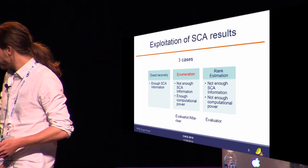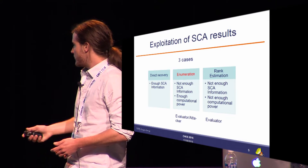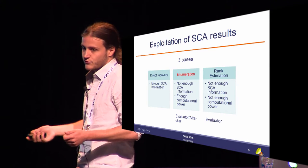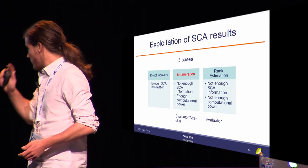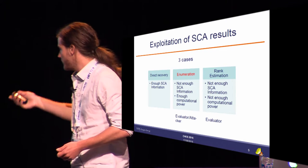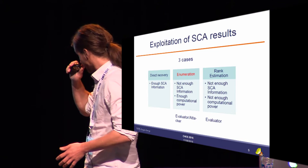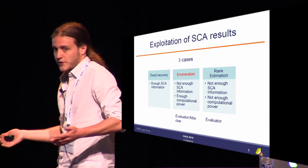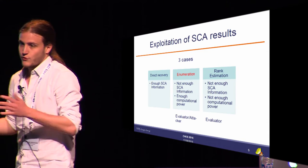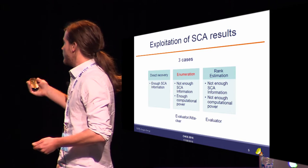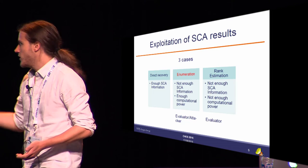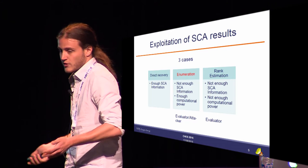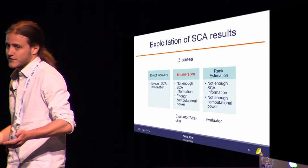If I have enough side-channel information, my actual key has the biggest probabilities in all sub-key lists, so I just concatenate the best sub-keys and directly recover the full key. The last case is where I don't have enough side-channel information and not enough computational power either — for example, if the key rank is 2^100, I can't enumerate up to that. But as an evaluator who knows the real key, I can estimate the rank. This is very important: direct recovery is a binary situation, but rank estimation tells me how close I was. A rank of 2^10 means the attack essentially worked; a rank of 2^100 means I'm secure.